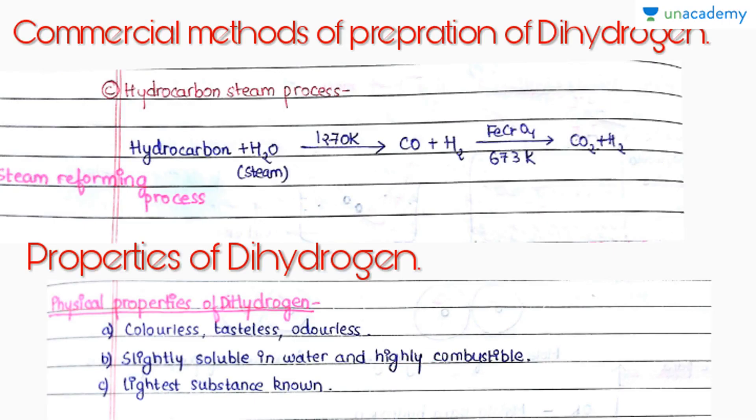Another process is when we pass steam through the hydrocarbon at high temperature, we get water gas. Then in the presence of iron chromate at high temperature, we pass steam and we get carbon dioxide and hydrogen gas. This process is known as steam reforming process.